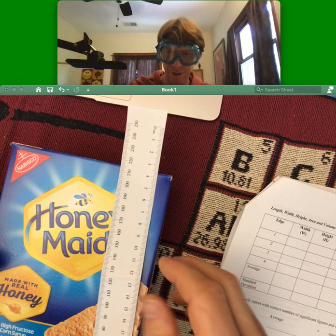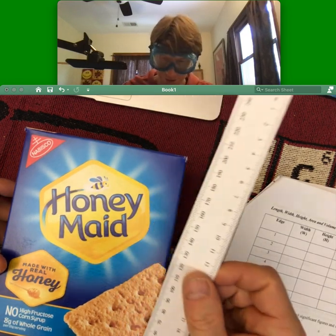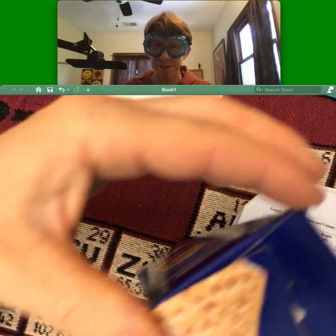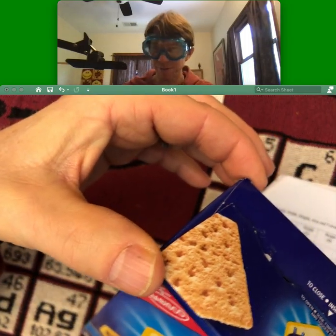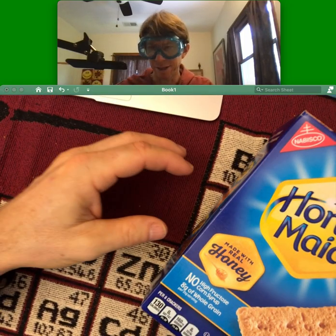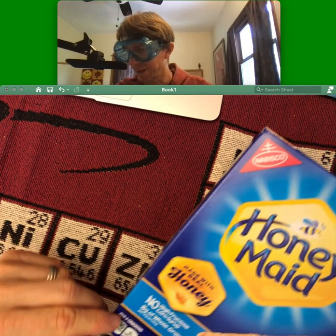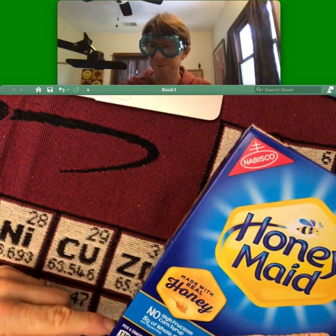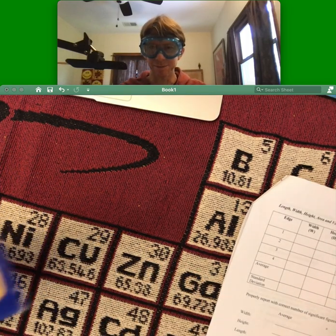I've chosen this Honey Maid graham cracker box. The shortest side, which for me is right here, that's going to be my width. Then this side is going to be my length. Oh sorry, this is going to be my height, this is going to be my length, and you just want to measure each of them four times.